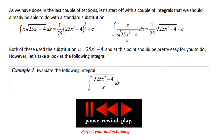Similarly, if we had the square root of 25x² minus 4 in the denominator, again you could let u equal that. This x dx in the numerator would become part of du. You would add 1 to the exponent, divide by the new exponent, simplify, and you would have this. Notice that we always put the answer in terms of the native variable, which was x.